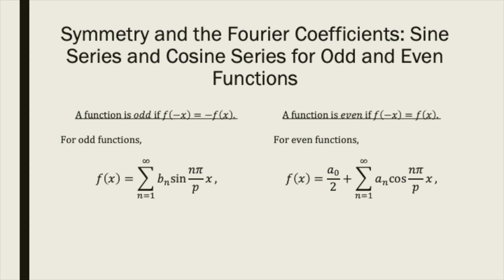Then for even functions, the coefficients of the sine terms, the b_n, are all equal to 0, and the Fourier series can be written as a constant term plus an infinite series of cosines, called a cosine series.